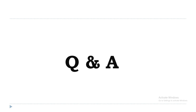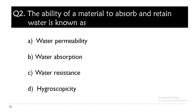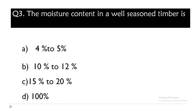Now let's look at some review questions. Question 1: The process by which timber is cut and sawn into suitable sections is known as — screening, sawing, conversion, or seasoning? Answer: conversion. Question 2: The ability of a material to absorb and retain water is known as — water permeability, water absorption, water resistance, or hygroscopicity? Answer: water absorption. Question 3: The moisture content in a well-seasoned timber is — 4–5%, 10–12%, 15–20%, or 100%? Answer: 10–12%.